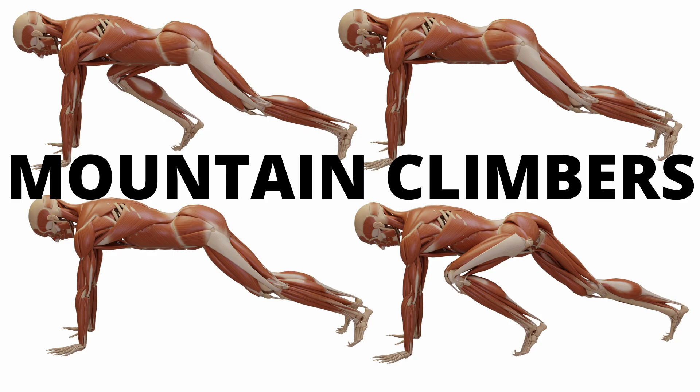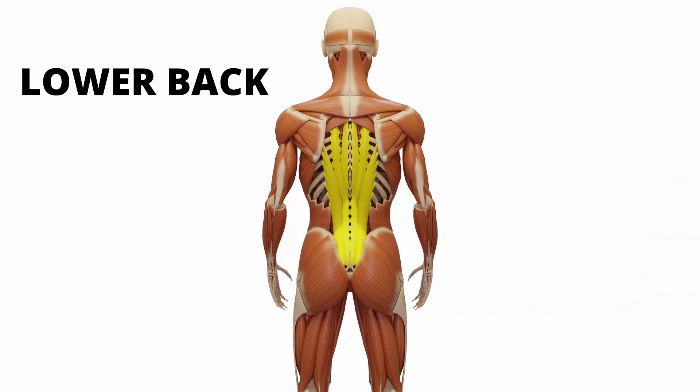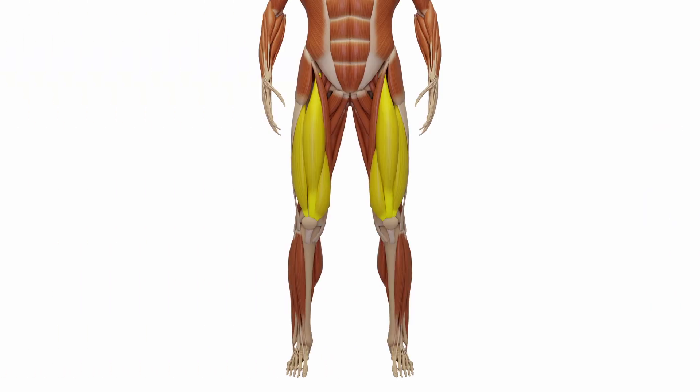Finally, mountain climbers. This is how you correctly train your core for fat loss. Unlike a static plank, the mountain climber is a dynamic movement. Your core, obliques, and lower back are all working overtime to keep your torso stable while your legs are in constant motion.